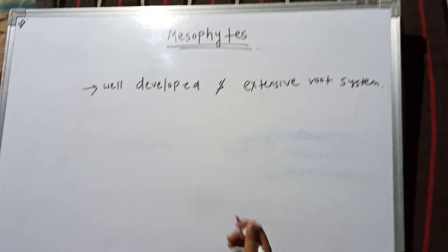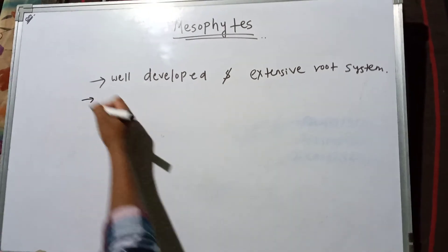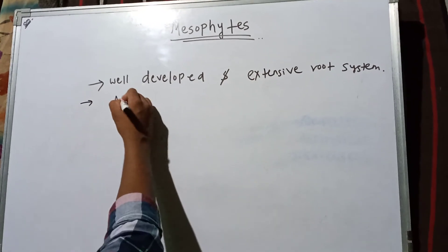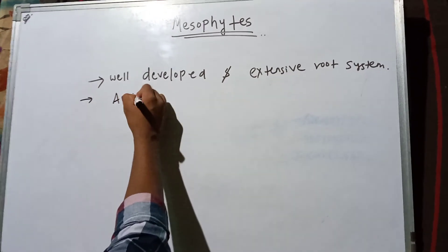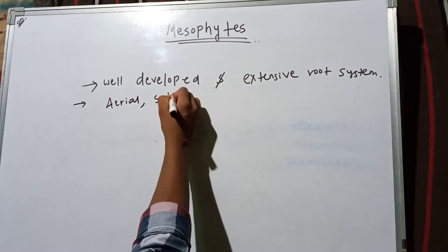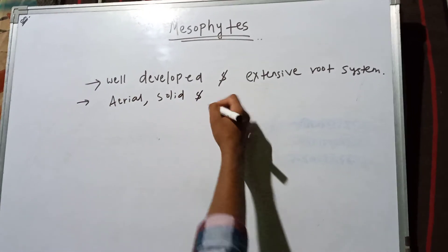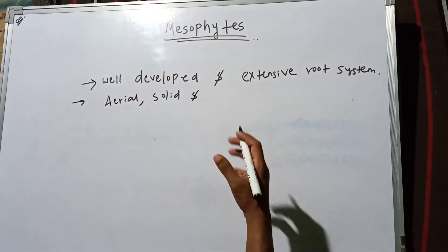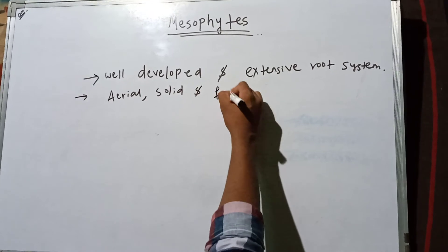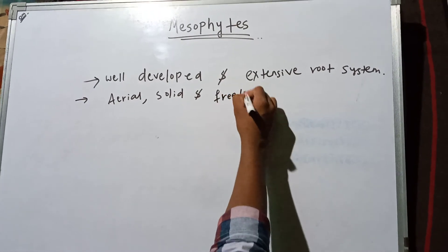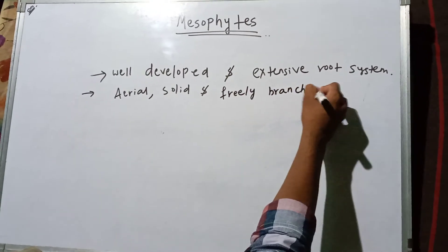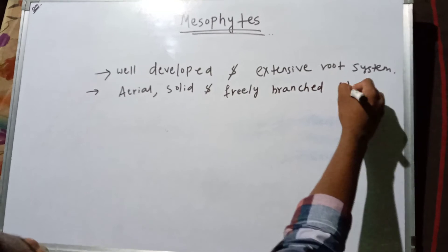The second feature is that mesophytes have aerial, solid, and freely branched stems.